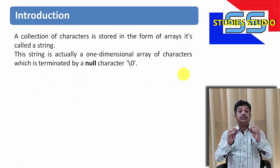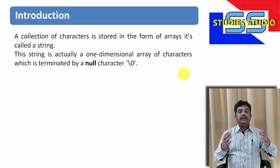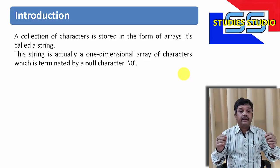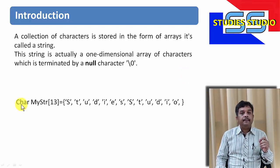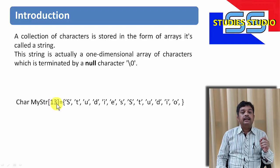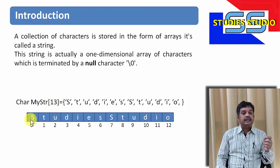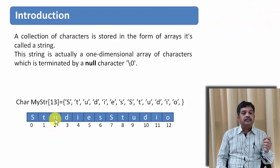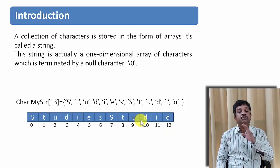Basically, a collection of characters stored in an array is called a string. And always in a one-dimensional array, we terminate a string with a null character or backslash 0. Let us define an array of type character having 13 characters which has 'studies studio' as data. On the 0th index, capital S will be there, on the first index T, second index U, third index D. In this way, from index 0 to 12, this 'study studio' is kept.